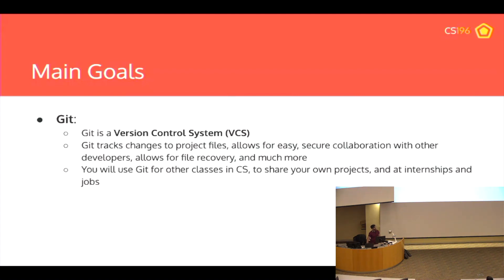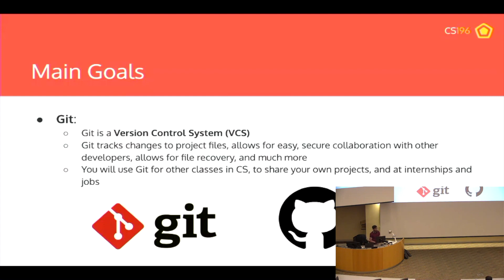We're also going to teach you Git, an incredibly useful tool for any computer scientist, because Git is version control. When you're working on a project, you want to keep track of all your previous iterations. If you add a new update and your app breaks, you have nothing to fall back on without version control. Git is used by most enterprises — it's the industry standard. It allows you to collaborate securely with other developers and provides file recovery. You'll use it in your classes from now until you graduate, and beyond that in internships and work.